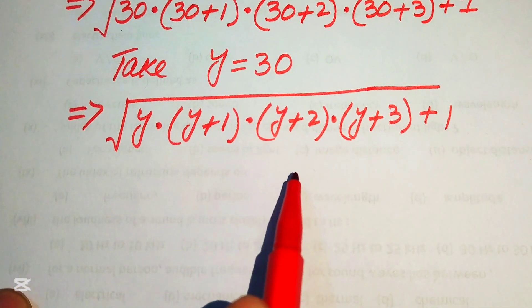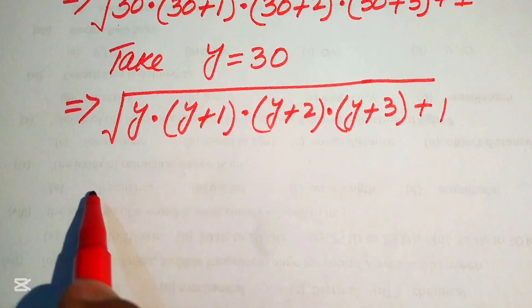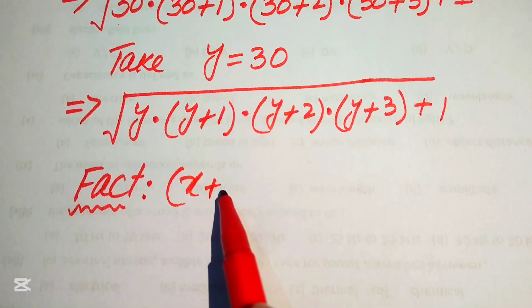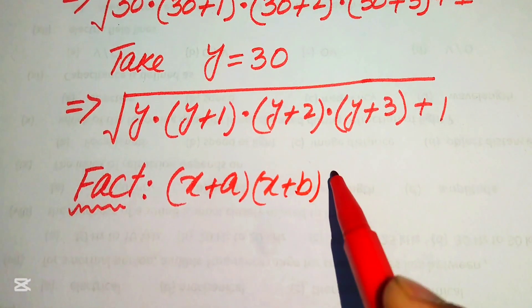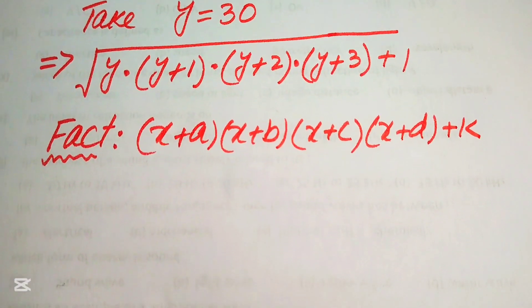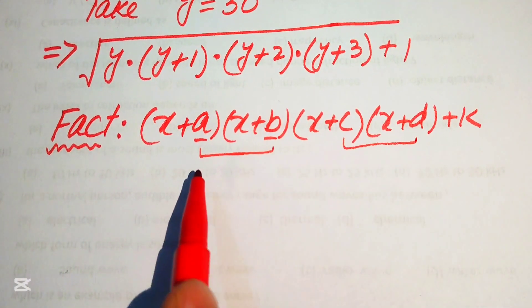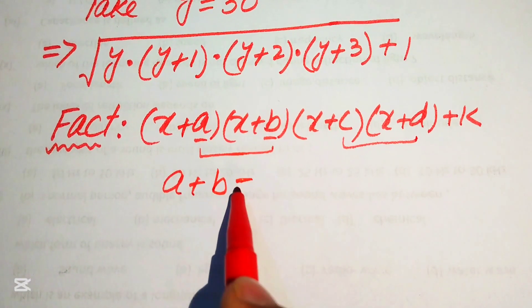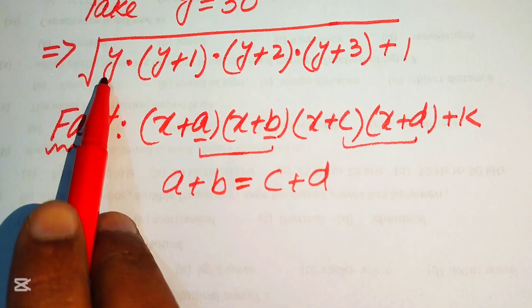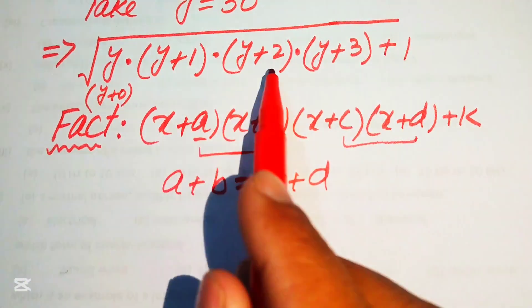We now rearrange the factors using an important fact: if we have factors (x+a)(x+b)(x+c)(x+d) plus k, and if a plus b equals c plus d, we can rearrange and pair them conveniently. Here y is the same as y plus 0, so we have 0, 1, 2, 3 as our added values.